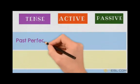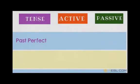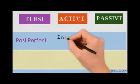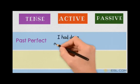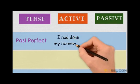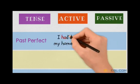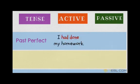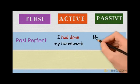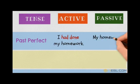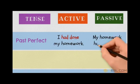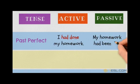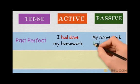In past perfect, you write 'I had done my homework' in active. In passive, the object comes first: 'My homework had been done,' with 'been' placed between 'had' and 'done.'